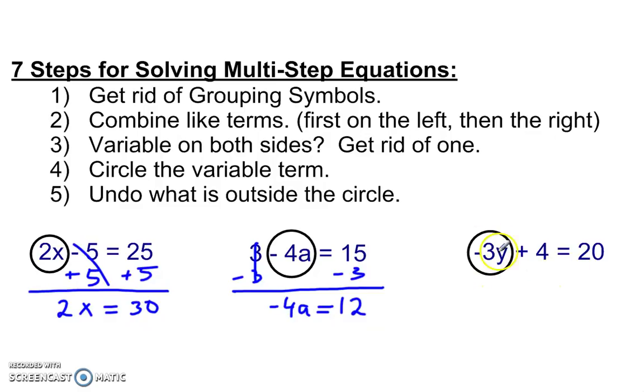Over here, subtract 4. Inverse operation, eliminator. Negative 3y is equal to 16.